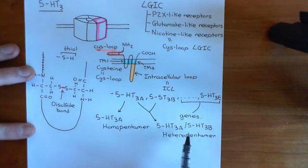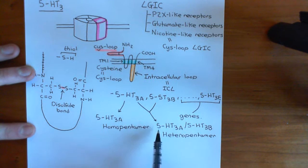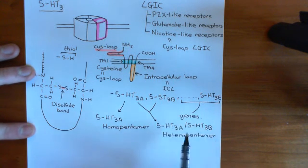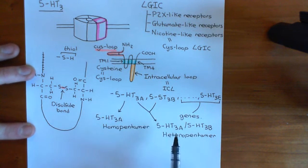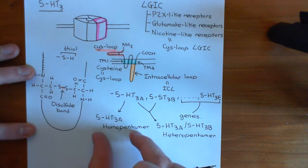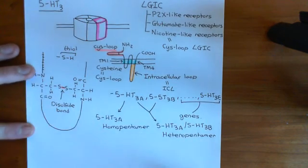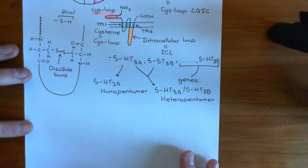The stoichiometry of the heteropentamer is not known — whether you include one 5-HT3A subunit and four 5-HT3B subunits, or two 5-HT3A subunits and three 5-HT3B subunits is unclear. The arrangement of the subunits relative to one another is also unknown. All we know is that you can find receptors which are all 5-HT3A subunits, or ones which are a mixture of 5-HT3A and 5-HT3B subunits.